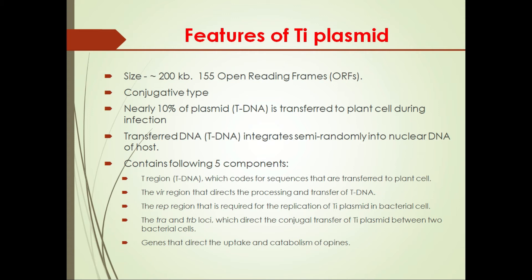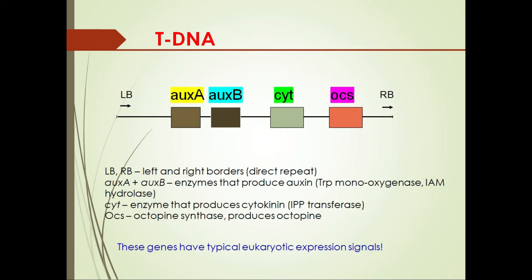The T-DNA region transferred to the plant has a specific arrangement with left and right borders, which are direct repeats. It contains AUXA and AUXB — two ORFs that code for enzymes producing auxin — and CYT, a gene coding for an enzyme that produces cytokinin. There is also OCS (octopine synthase), which produces octopine. Notably, all these genes have typical eukaryotic expression signals, since they must be expressed in the plant cell after transfer.